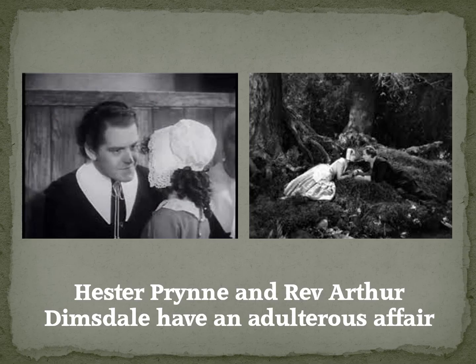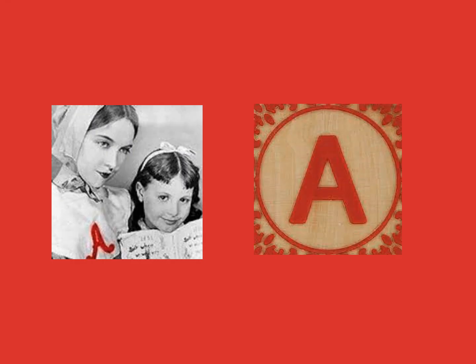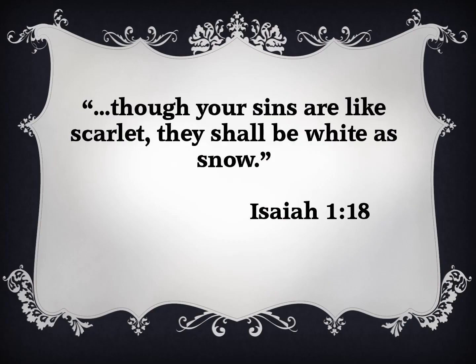The plot revolves around an adulterous affair between Hester Prynne and Reverend Arthur Dimmesdale. Hester must wear a Scarlet A for adultery on her clothing. The color is taken from Isaiah 1:18: 'Though your sins are like scarlet, they shall be white as snow.'